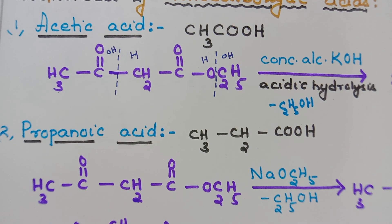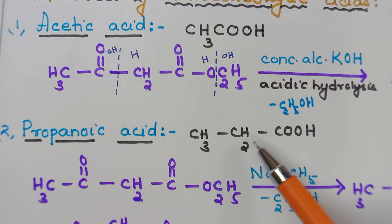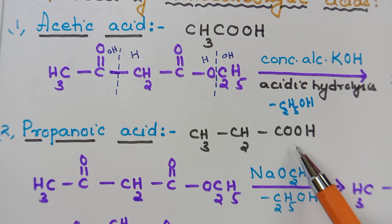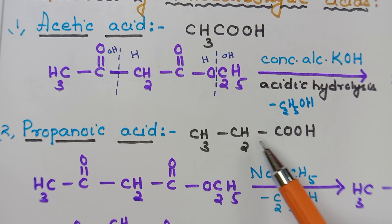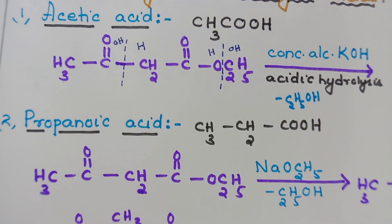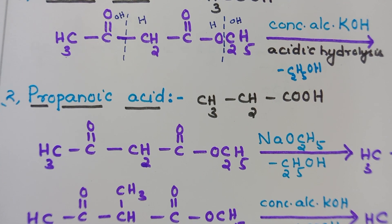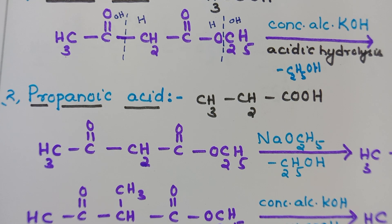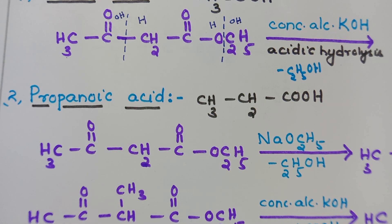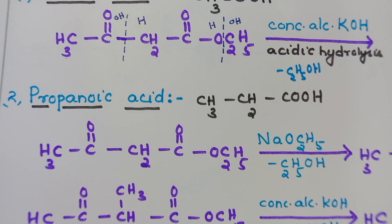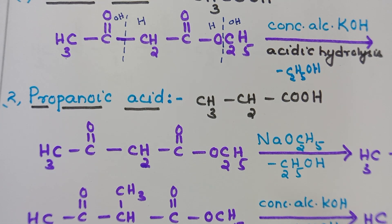Moving on to the second compound: propanoic acid. Put the side heading 'Propanoic Acid.' Its formula is CH₃CH₂COOH — three carbons, one -COOH group, hence it is a monocarboxylic acid. To start with, write down acetoacetic ester: CH₃-C(=O)-CH₂-C(=O)-OC₂H₅.